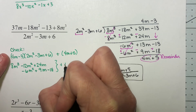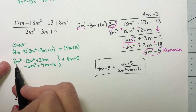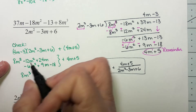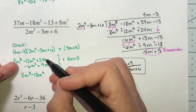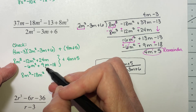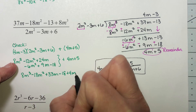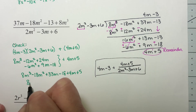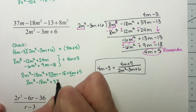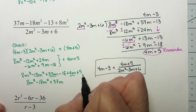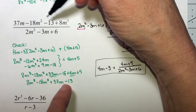Combining all terms and then adding 4m plus 5: 8m cubed has nothing to match. Negative 12 minus 6 is minus 18m squared. 24 plus 9 is 33m, minus 18 plus 4m plus 5. Combining like terms: 8m cubed, minus 18m squared, 33m plus 4m is 37m, and negative 18 plus 5 is minus 13. It's in a different order but we have exactly the same terms, so our answer is correct.